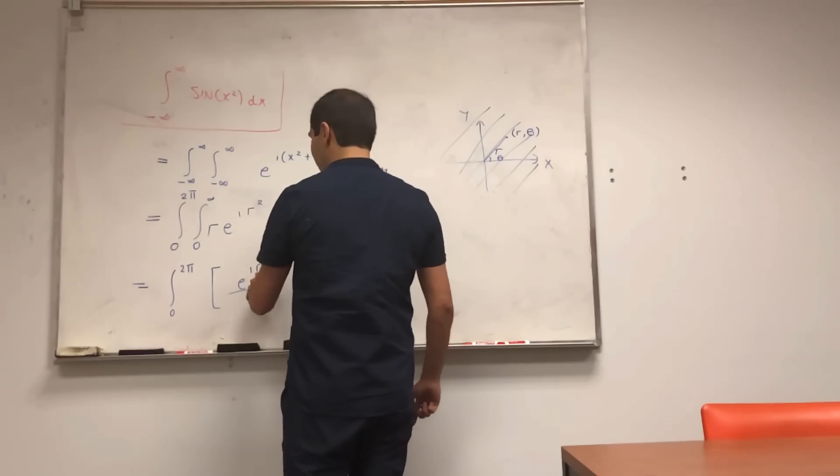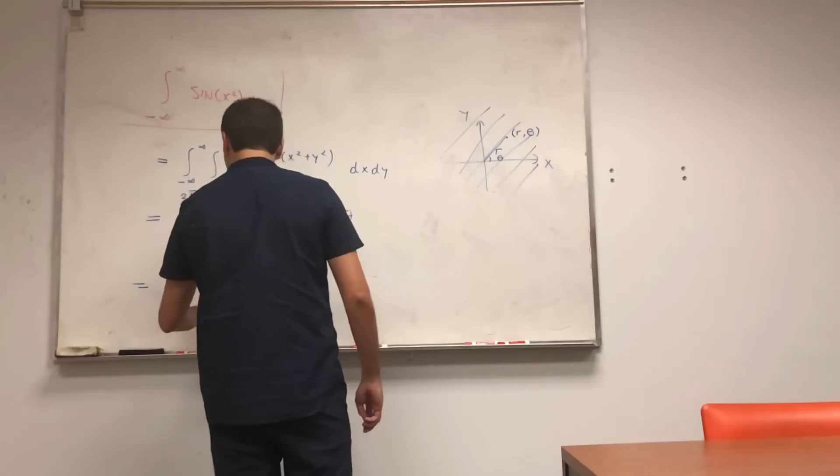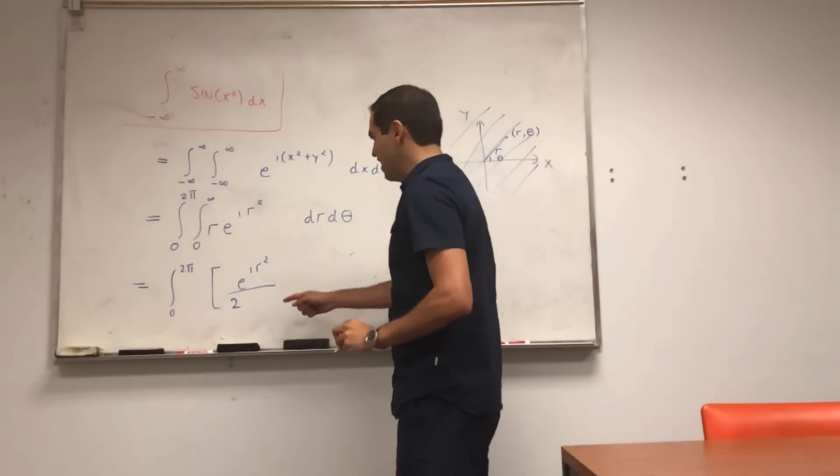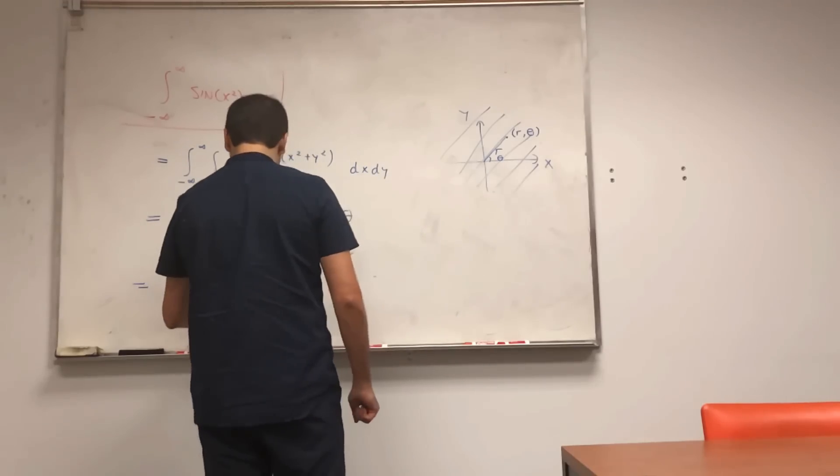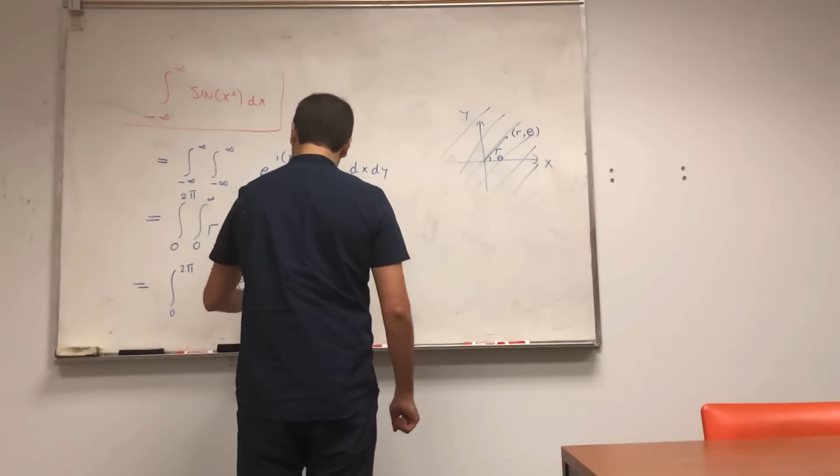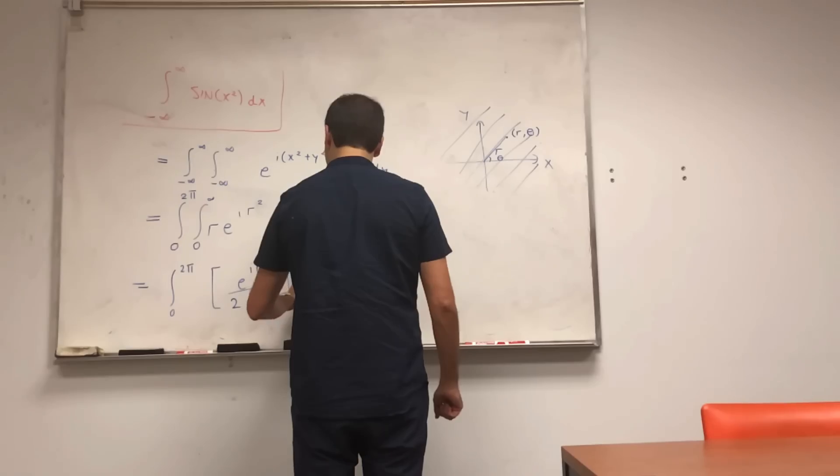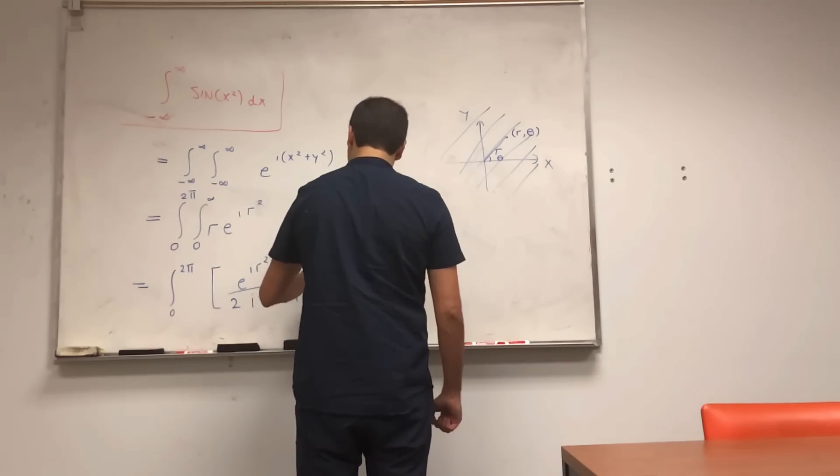And we're left with integral from zero to two pi of e to the i r squared. Okay, so what we have to do, we have to anti-differentiate this. And to anti-differentiate this, first of all, because of the factor of r squared, we have an extra factor of two, which we need to divide this by.